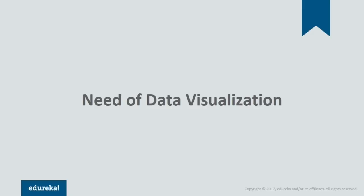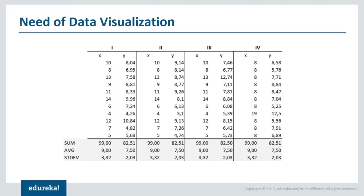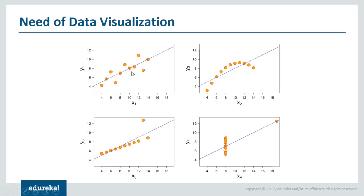Moving on, let us understand the need of data visualization. There is a very good example to make you understand why we need to visualize data, and this is the Anscombe's Quartet. These are the X and Y points that you can plot on a graph, and it is therefore four different quadrants. If you take a look here, the numbers are almost the same — the sum, average, and standard deviation are completely equal. So you might be thinking that when we plot these points on a graph, the graph will look pretty much the same. But when you actually plot it, you can see it is completely different. The lines formed by these points are completely different from each other.